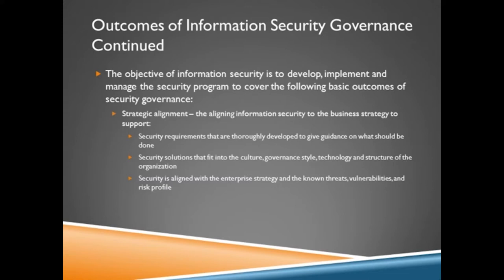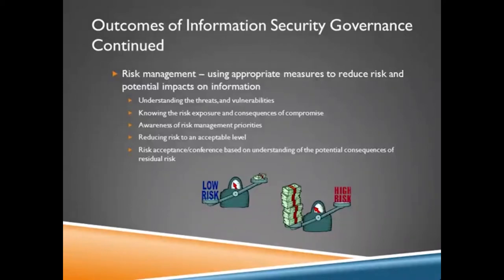We can't sometimes be so secure that we're stifling the actual goal of the business strategy — rather, we should be supporting it and trying to make the objectives align with each other. With strategic alignment, your security requirements should be thoroughly developed to give guidance on what should be done, your security solutions should fit into the culture, governance style, technology, and structure of the organization, and the known threats, vulnerabilities, and risk profile should be appropriately looked at and dealt with or contained. Another outcome of your security governance is risk management, which is really the foundation for a lot of the policies and security programs you're going to be creating.